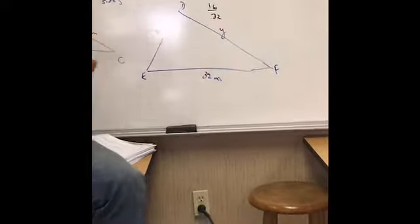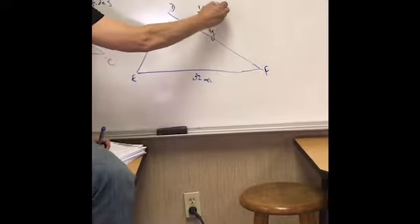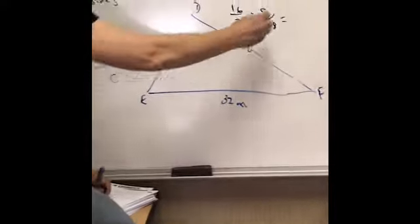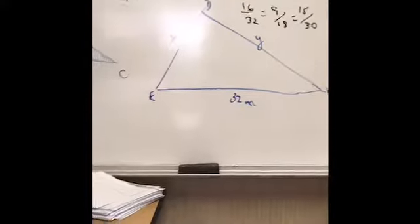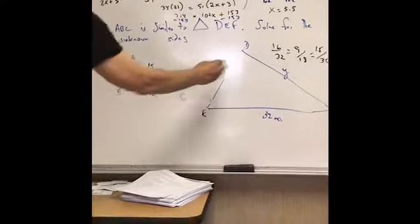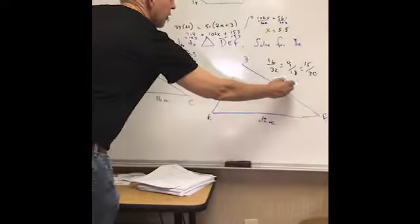Then we know that 9 has got to be to 18. And then we know that also 15 is going to be 30. That's preserving the scale factor and the ratio. So those are your answers. X is going to be equal to 18. And Y is equal to 30.